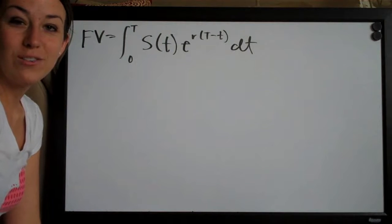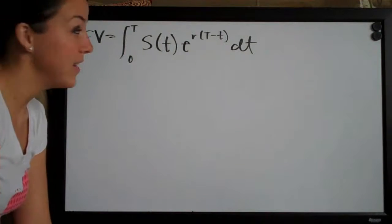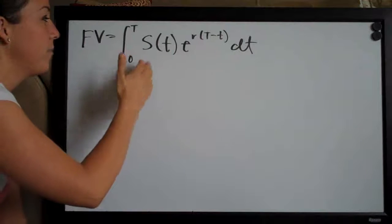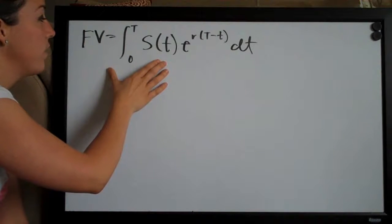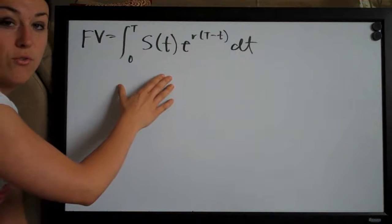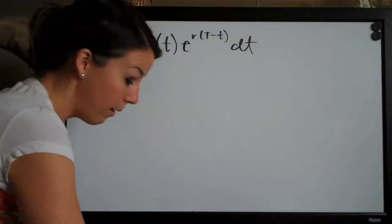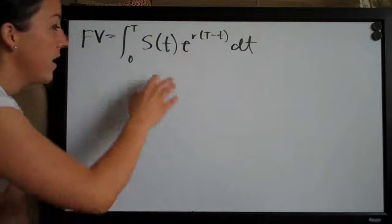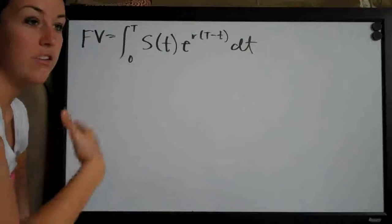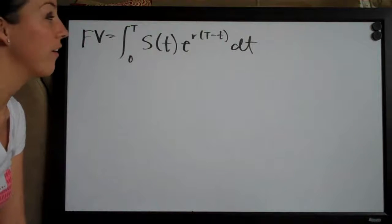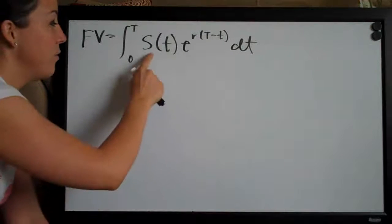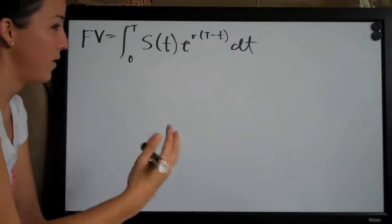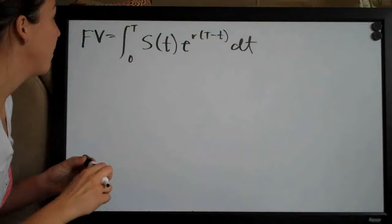Hi everyone, welcome back to integralcalc.com. We're going to be doing another future value problem today using the following formula which represents a continuous income stream. We need this formula with an integral because in the problem we are adding a thousand fish to a lake every year. This s(t) represents the stream as we add fish, so we have to use this formula.